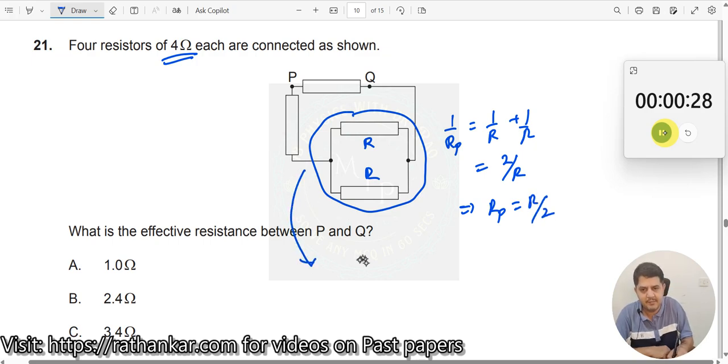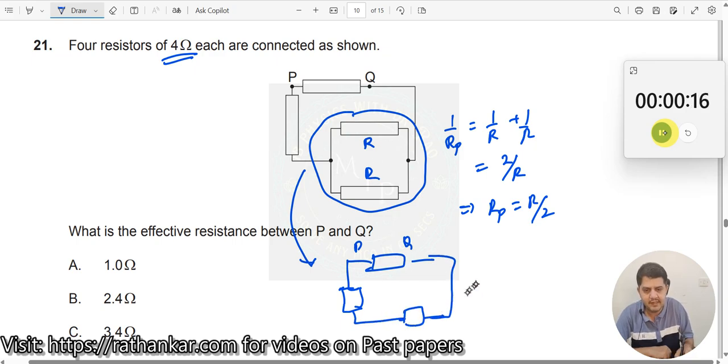So, now this circuit becomes something like this. This is your one resistor here. This is your PQ and you have one more resistor here and then you have these two combined together will give you something like this. This is how it looks like. Now, what will happen? This is your R by 2.